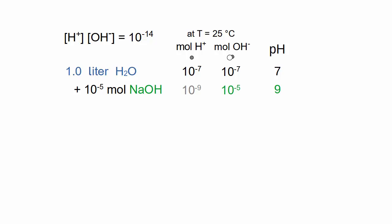If you instead add 10 to the minus 5 mole hydrochloric acid to a liter of water, the ion concentrations are exactly the opposite.